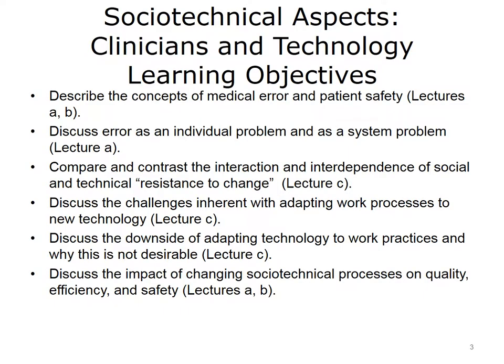The objectives for Sociotechnical Aspects, Clinicians, and Technology are to describe the concepts of medical error and patient safety, discuss error as an individual problem and as a system problem, compare and contrast the interaction and interdependence of social and technical resistance to change, discuss the challenges inherent with adapting work processes to new technology, discuss the downside of adapting technology to work practices and why this is not desirable, and discuss the impact of changing sociotechnical processes on quality, efficiency, and safety.